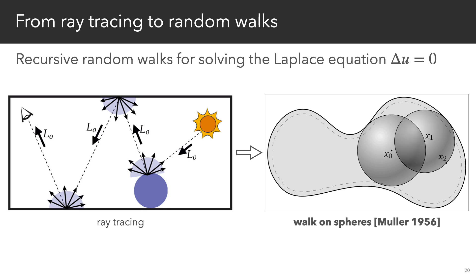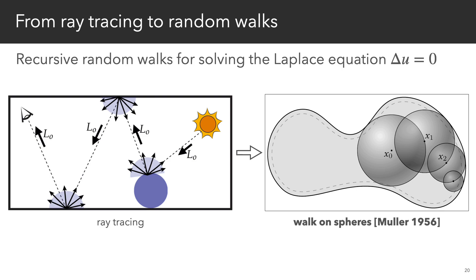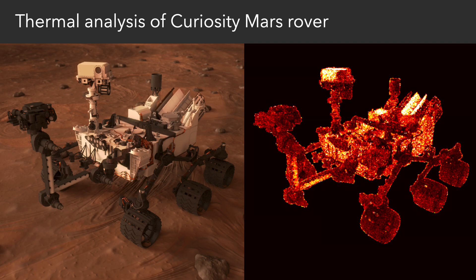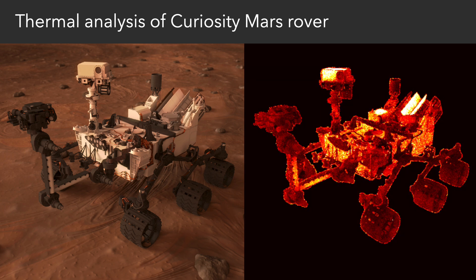The workhorse of our approach is a little-known algorithm from the 1950s called Walk-on-Spheres, which, like ray tracing, performs recursive random walks in a scene. We extend Walk-on-Spheres to handle different types of boundary conditions, which enables us, for instance, to perform a thermal study on the Curiosity Mars rover, where keeping temperatures within a specified thermal limit is critical to mission success.